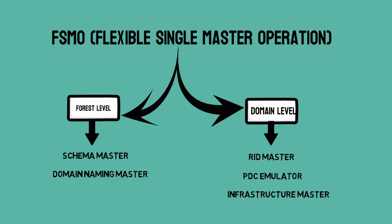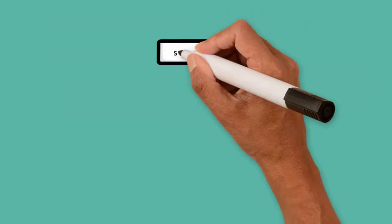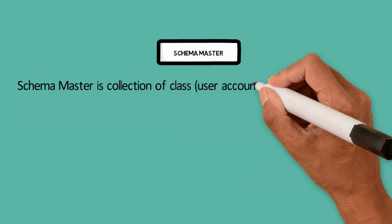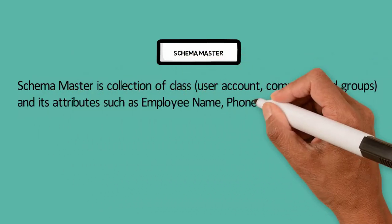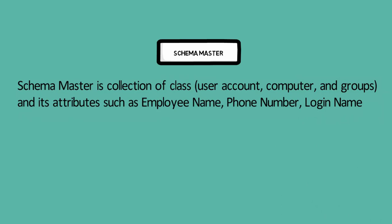Schema Master is a collection of classes and their attributes. Classes are a common term for account types such as user accounts, computer accounts, and group accounts. Attributes are the details you can add to these accounts — for example, employee name, department, and phone number in a user account, or additional details in a computer account. Let me show you the Schema Master and its attributes in the server.